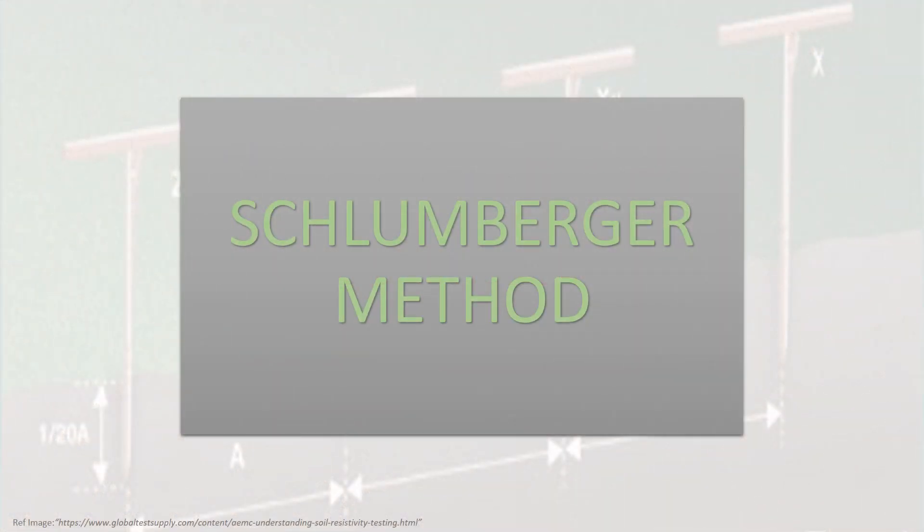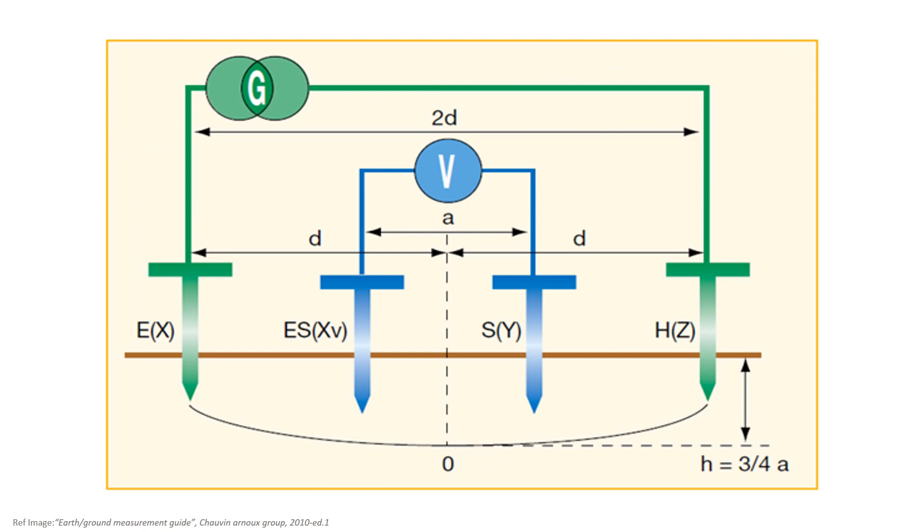The measurement principle of the Schlumberger method is based on the same measurement principle that the Wenner method. The only difference between them is the positioning of the electrodes. Now, the distance between the two outer electrodes is 2D, and the distance between the two inner electrodes is A.